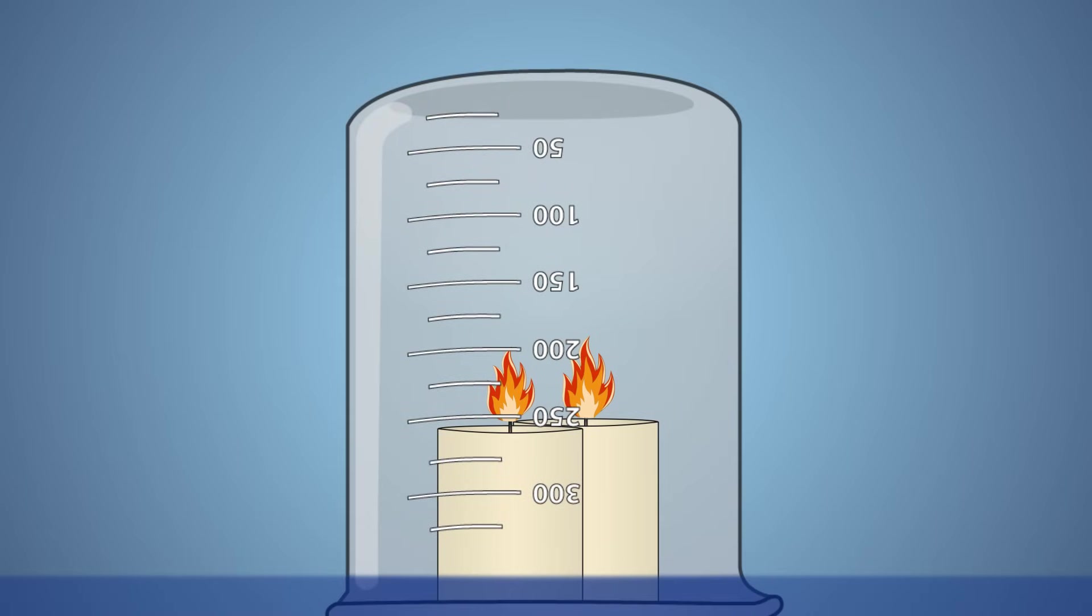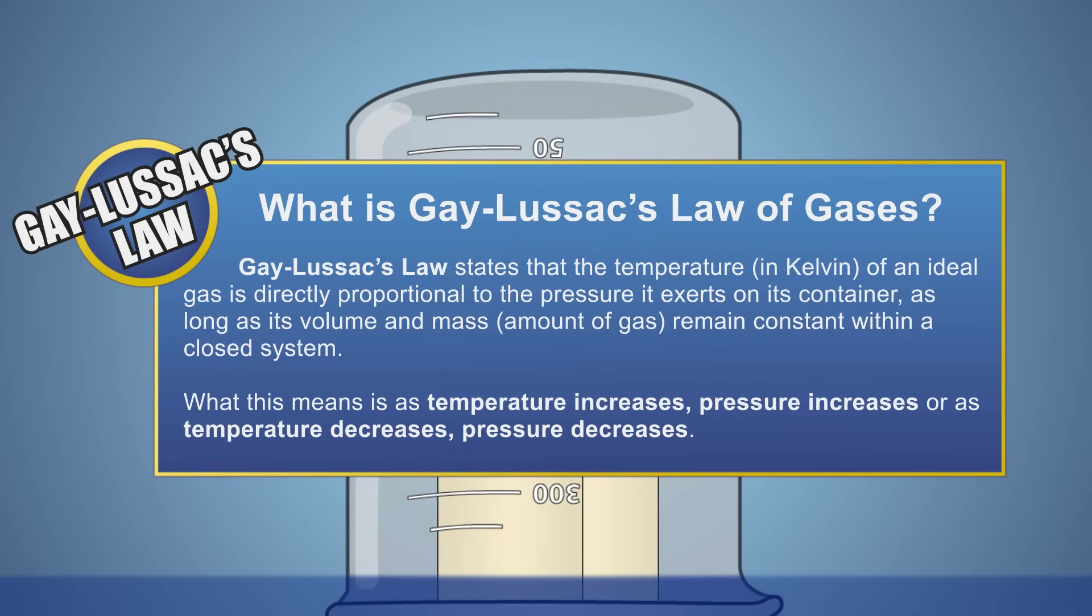Let's look at this experiment a little closer. Gay-Lussac's Law states that when a fixed amount or mass of an ideal gas is kept at a constant volume and in a closed system, then its temperature and pressure are directly proportional.